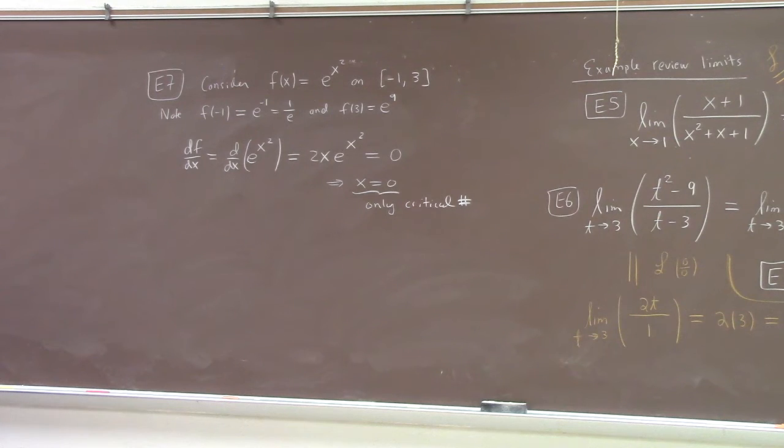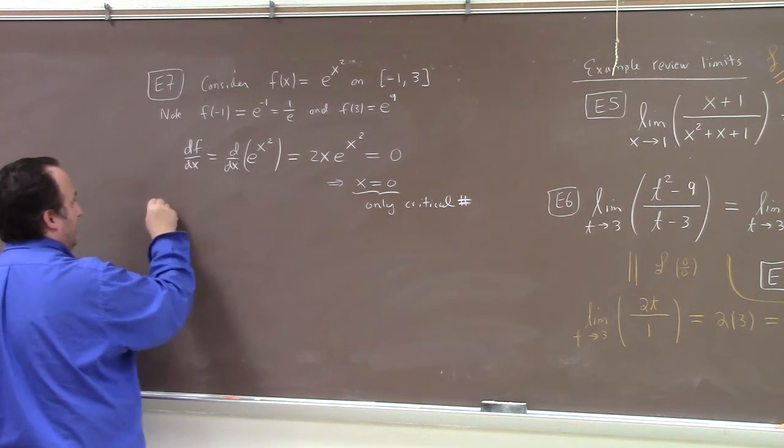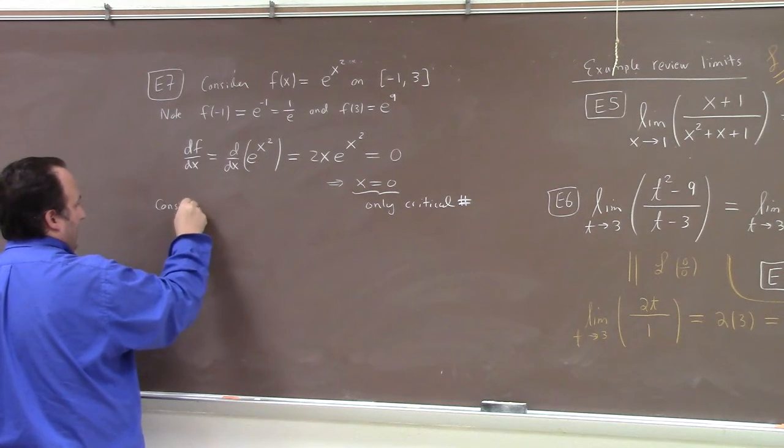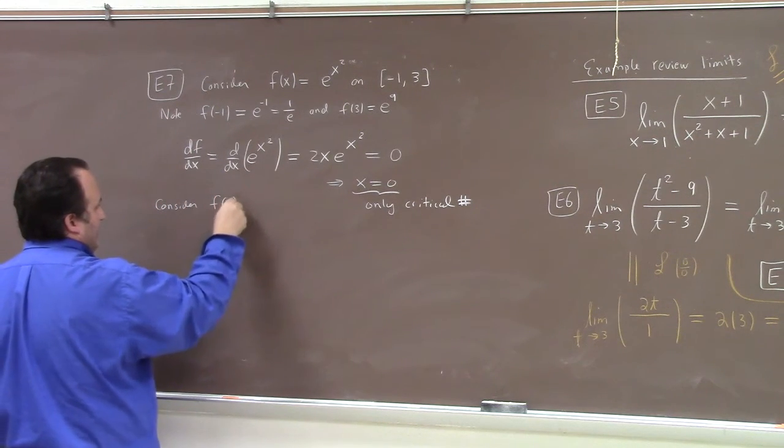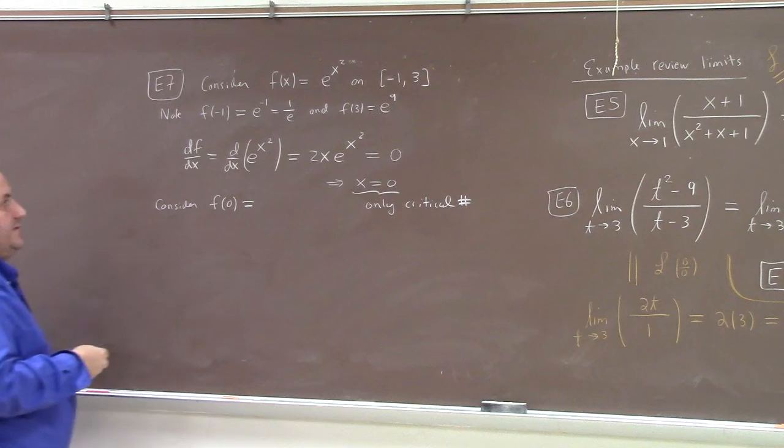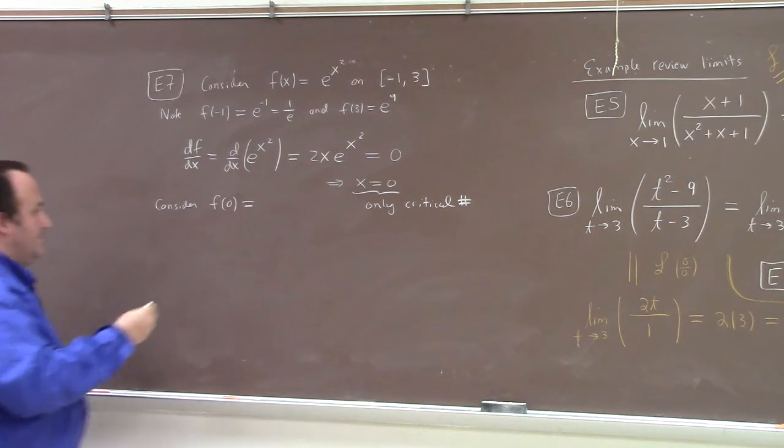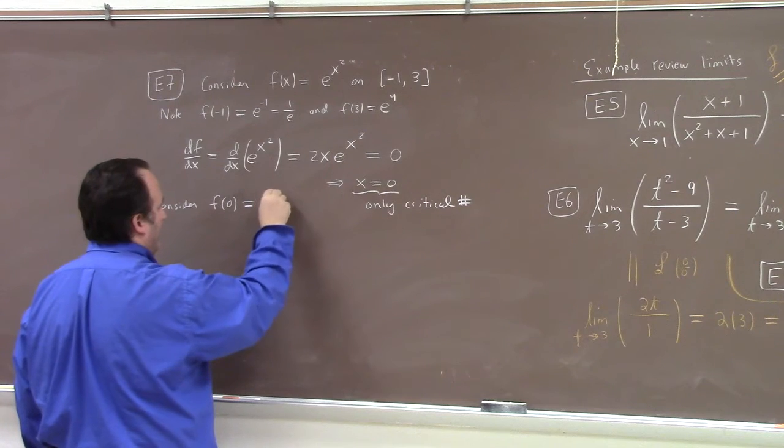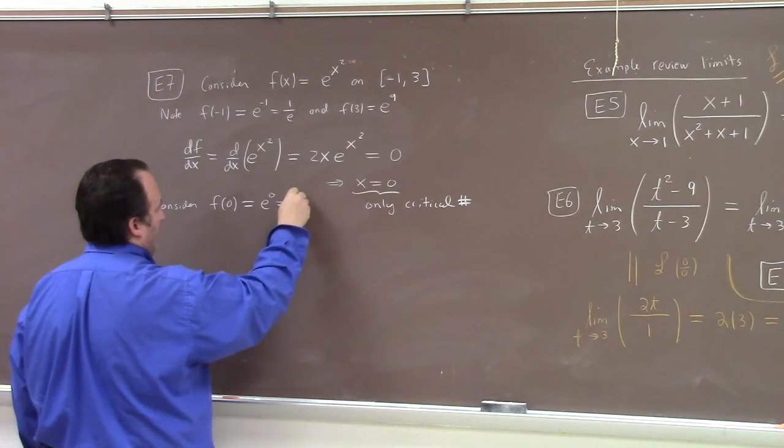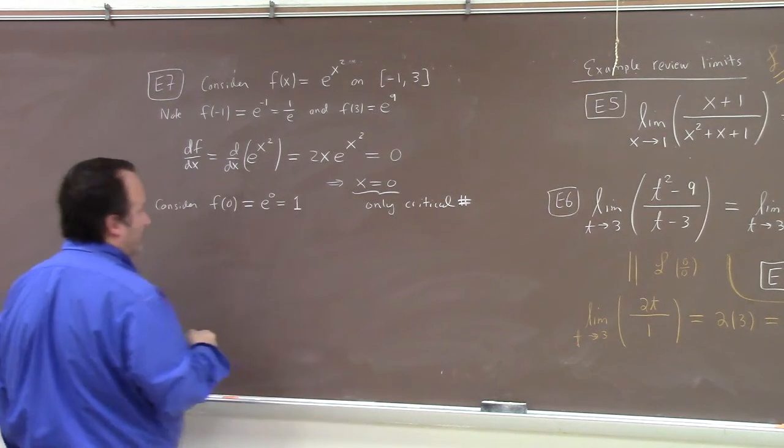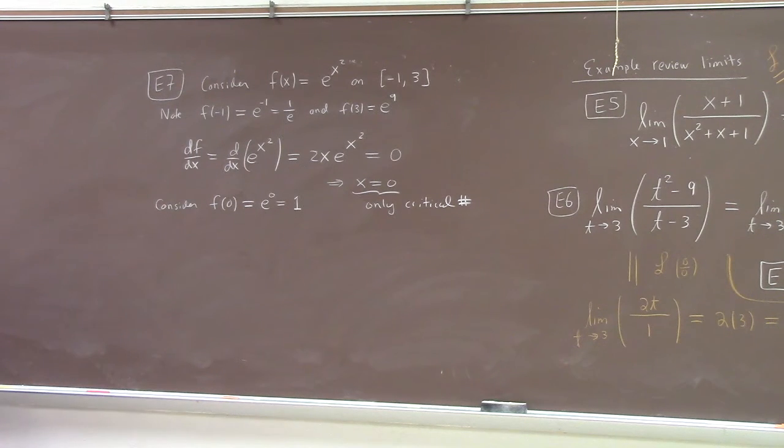Only critical number for this problem. So the only additional number we need to check for this example is f of 0. f of 0, then. What is f of 0? Well, f of 0 is e to the 0 squared, which is e to the 0, which is what? It's 1, right?